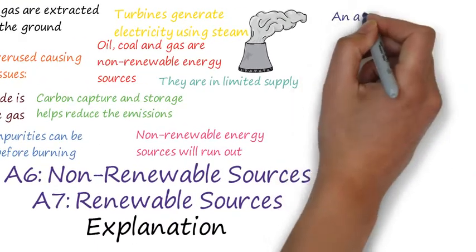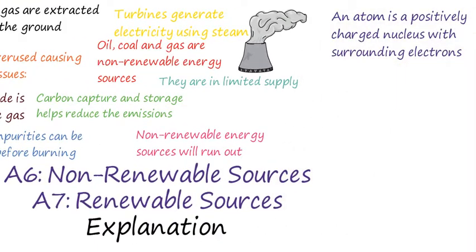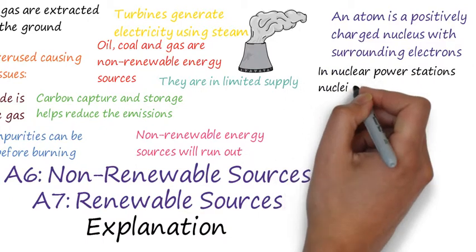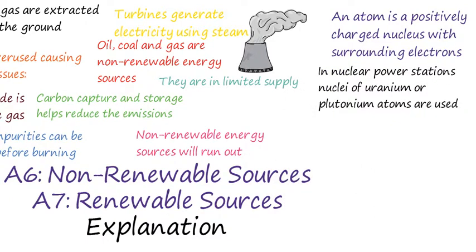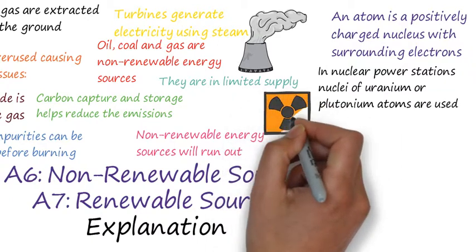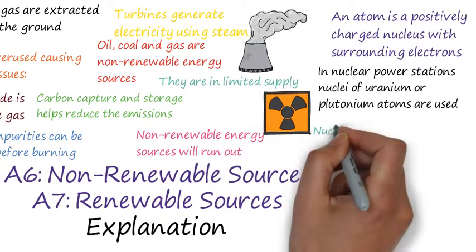Now we move on to nuclear power. You should know from your chemistry lessons that every atom is a positively charged nucleus with surrounding negatively charged electrons. In nuclear power stations, the nuclei used is uranium or plutonium. Uranium is mainly used because its nucleus is very unstable and splits apart, giving out energy.